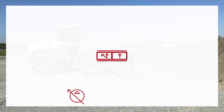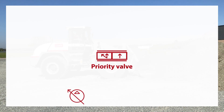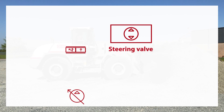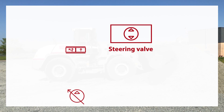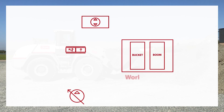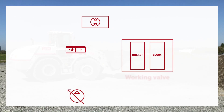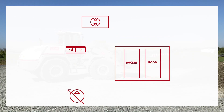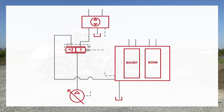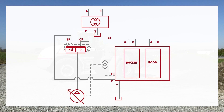A priority valve feeds the steering system and distributes excess oil flow to the working valve. The steering orbital displaces a maximum of 520 cc per revolution, which gives three and a half to four turns lock to lock. The hydraulic valve we select later should be compatible with this original system setup.